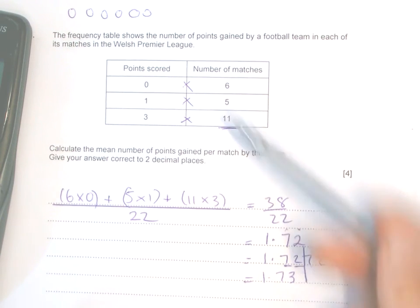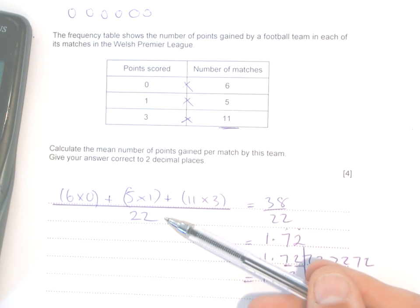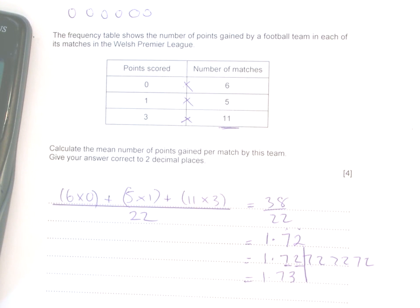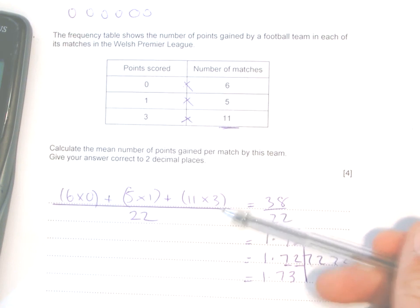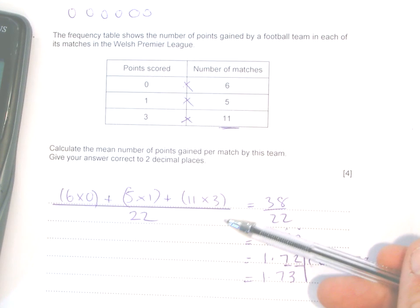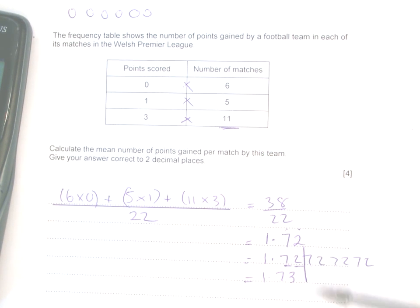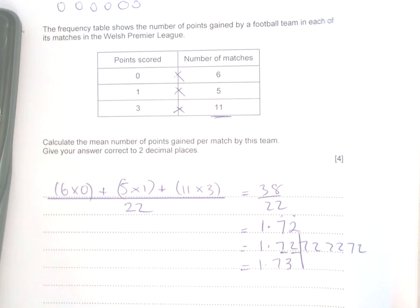Really important there: you're multiplying them, dividing by 22. You'll get a mark for showing this here, a mark for showing they divided by 22, a mark for getting the answer out, and a mark for rounding. Okay, so if we go on to question seven.